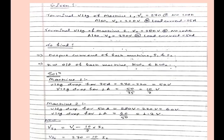So first of all we will write given. Terminal voltage of machine 1, V1 is equal to 270 volt at no load, also V1 is equal to 220 volt at load current of 35 ampere.